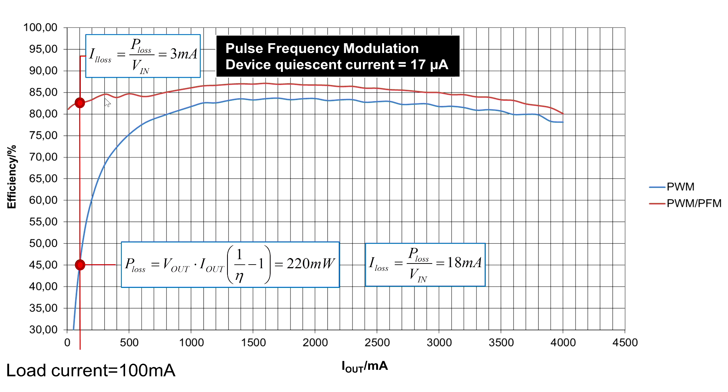And we do this by reducing the switching frequency, reducing the conversion losses and minimizing the device quiescent current to 17 milliamps.